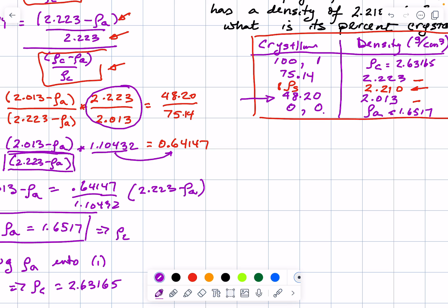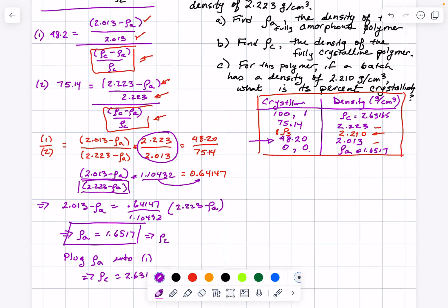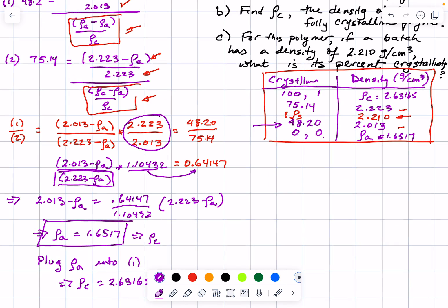So on the table, I'm just inspecting this to see if this makes any sense to me. Those numbers kind of look good, because we do expect the density of the amorphous phase to be the lowest value and the density of the crystalline phase to be the highest value. So it seems to make sense to me. I am ready at this point to move on to part C.